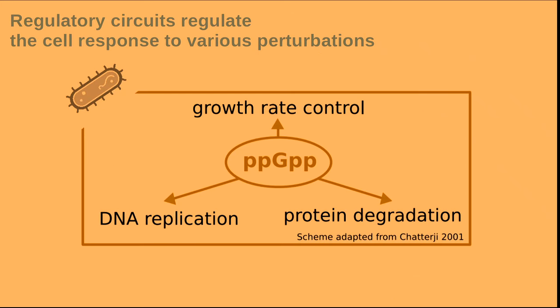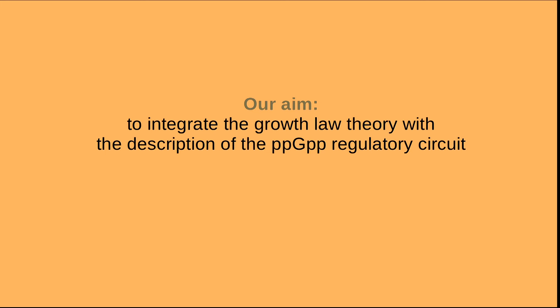What is still missing from this theory is the description of the regulatory circuit that actually implements this regulatory strategy. For example, in bacteria it is known that ppGpp is the circuit that regulates a lot of important processes inside the cell, and among these there is growth rate control. Because ppGpp is the one that basically sets how many ribosomes the cell is going to produce. Our aim here is to integrate this knowledge on the ppGpp circuit with the theory of growth law and the proteome sector, and to come up with a quantitative model that integrates both of these two theories.